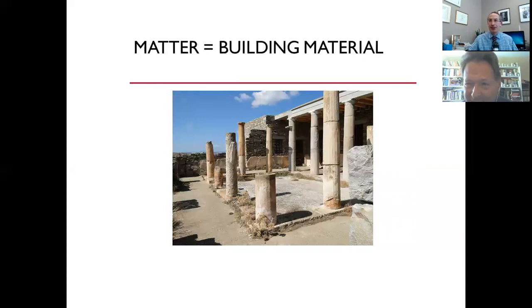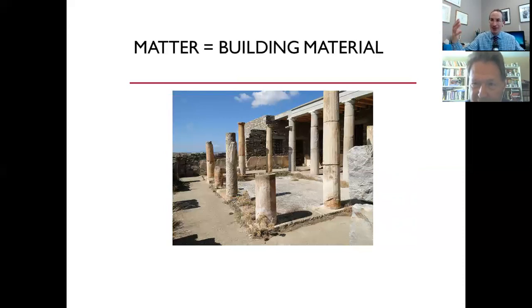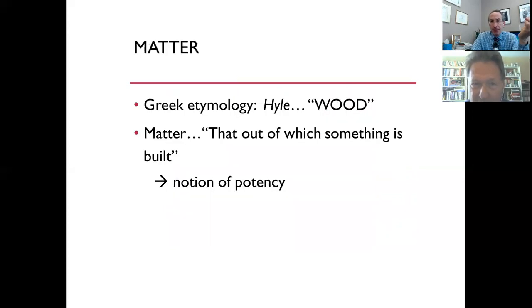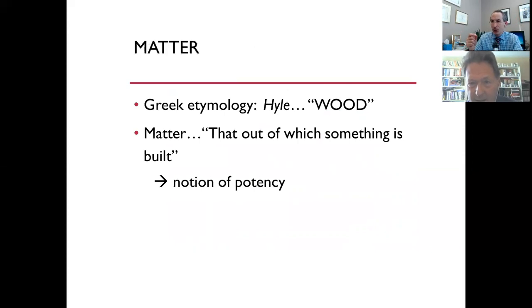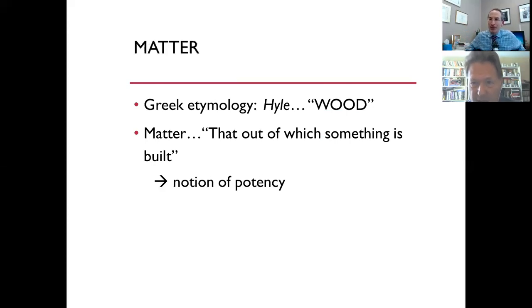The initial abstraction of the word 'hyle' or matter was from wood — a very basic primitive term. You can imagine a Greek contractor telling the owner of a project: 'The cost for the hyle for this project is going to be 10,000' — so the hyle was just building material, coming initially from wood to represent any building material. If 'hyle' is wood and then becomes building material — that out of which something is built — you can see in this the notion of potency. The house is in the potency of the stones, the ship is in the potency of the wood, the dress is in the potency of the cloth.